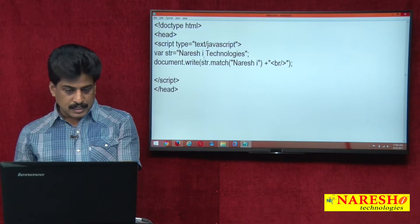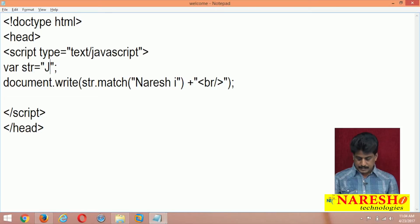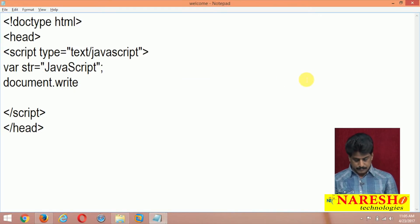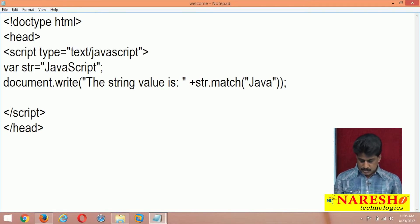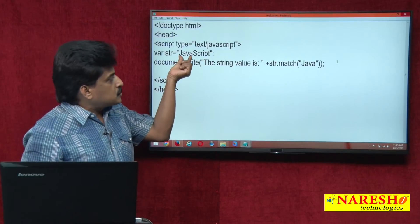The string is nothing but JavaScript, simple. I am taking. Now I am giving string match, remove everything. document.write I am giving str.match of double quotation Java double quotation close, again bracket close. Now I am saying here just a concatenation: the string value is plus concatenation. First we will observe here.